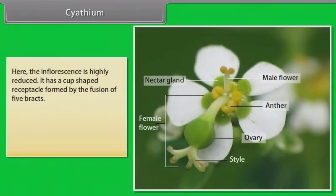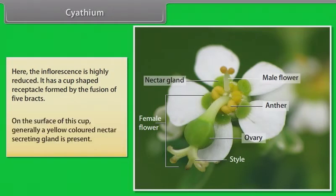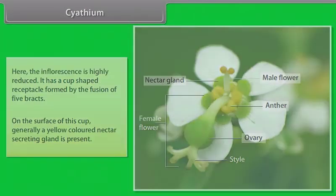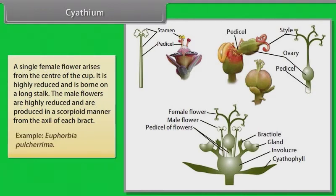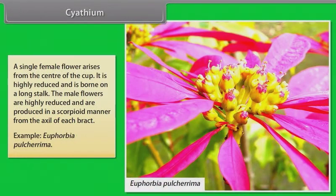In cyathium, the inflorescence is highly reduced. It has a cup-shaped receptacle formed by the fusion of five bracts. On the surface of this cup, generally a yellow-colored nectar-secreting gland is present. A single female flower arises from the center of the cup — highly reduced and borne on a long stalk. The male flowers are highly reduced and are produced in scorpioid manner from the axil of each bract. Example: Euphorbia pulcherrima.